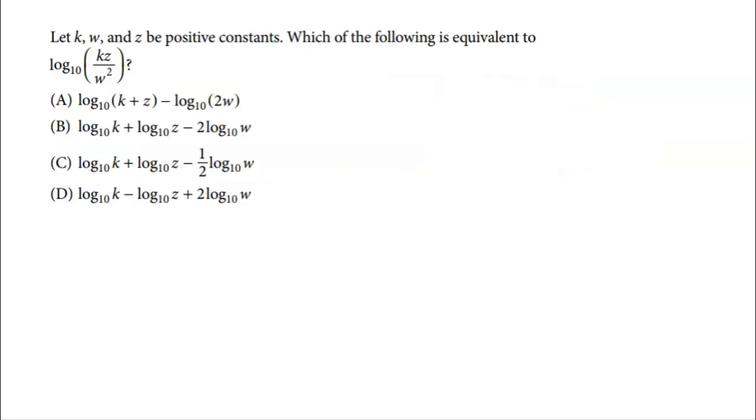In this first question it says let k, w, and z be positive constants, which of the following is equivalent to log base 10 of kz divided by w squared. This is a classic expansion problem. We want to use our log rules to expand this from a single log to multiple logs. So first I have this division right here that I'm going to separate with subtraction. So I have log base 10 of kz minus log of w squared base 10. Then right here I'm going to expand this multiplication with addition. So that's log base 10 of k plus log base 10 of z. Then I'm going to use the power rule and I'm going to bring this 2 out in front. So I have minus 2 log base 10 of w. So there should be my final answer, which I see is choice b. Very nice and simple there, not too bad, as long as you remember those very simple rules.